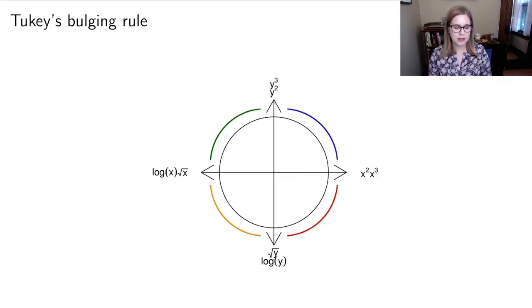If those transformations didn't work, then I could make it more extreme by going y to the third or taking the log of y. It's not like a proof, it's not something that's been formalized. This is just kind of a rule of thumb to help you as you're working. But like I said, most of the time we do a natural log or we do a square root. Very rarely do I actually do either of these kind of transformations where I'm raising things to powers.